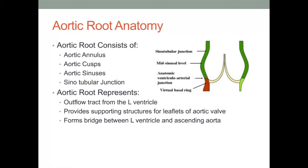An understanding of aortic root anatomy is critical to best describe and differentiate between aortic root enlargement techniques. The aortic root consists of the aortic annulus, aortic cusps, aortic sinuses, and the sinotubular junction. The aortic root represents the outflow tract from the left ventricle, it provides supporting structures for the leaflets of the aortic valve, and it forms a bridge between the left ventricle and ascending aorta.